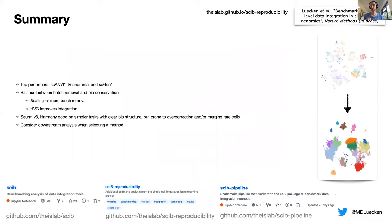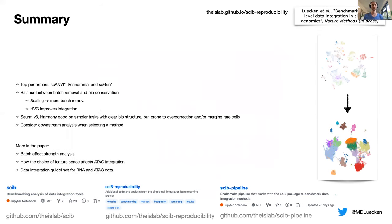To summarize: various methods perform well in certain scenarios, and specifically preprocessing can affect the balance between batch removal and bioconservation. You should always consider the downstream analysis you're going to do when selecting a method, because corrected features will give you more flexibility compared to an integrated graph. In the paper, you can find more about batch effect strength analysis, how different feature spaces affect ATAC integration, and guidelines for RNA and ATAC data integration. You can explore all our produced results on the website or try running things yourself with our pipeline.